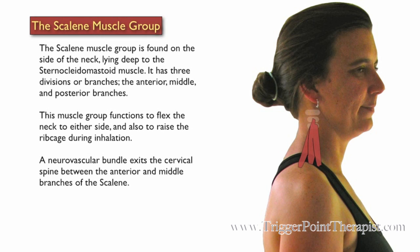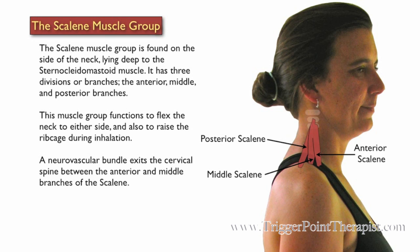The scalene muscle group is found on the side of the neck, lying deep to the sternocleidomastoid muscle. It has three divisions or branches: the anterior, the middle, and the posterior. This muscle group functions to flex the neck to either side and also to raise the ribcage during inhalation.